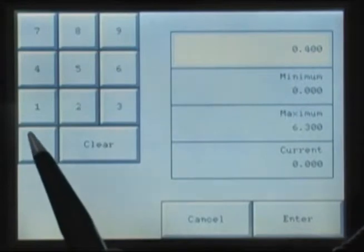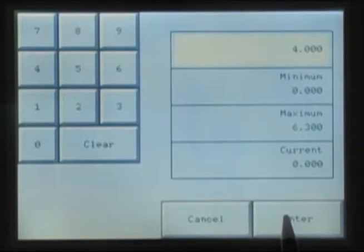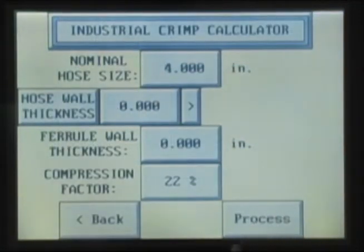The ACT Controller will supply three decimal places for all entries. Therefore, a 4-inch nominal hose size would be entered as 4-0-0-0, and the ACT Controller would respond with 4.000 inches.